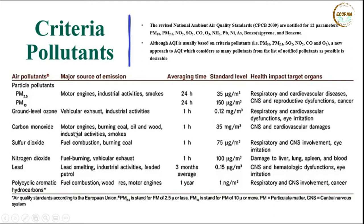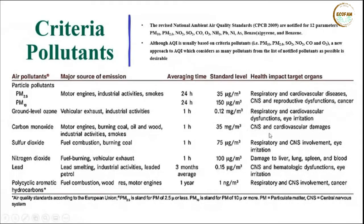Carbon monoxide is mainly produced by motor engines and the burning of coal, oil, or wood through incomplete combustion of fossil fuels or biomass. It is calculated on an hourly basis, and its concentration should not exceed 35 milligrams per cubic meter. It causes central nervous system and cardiovascular damage.